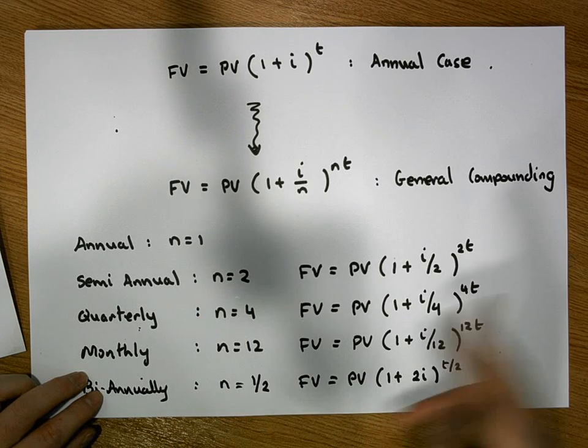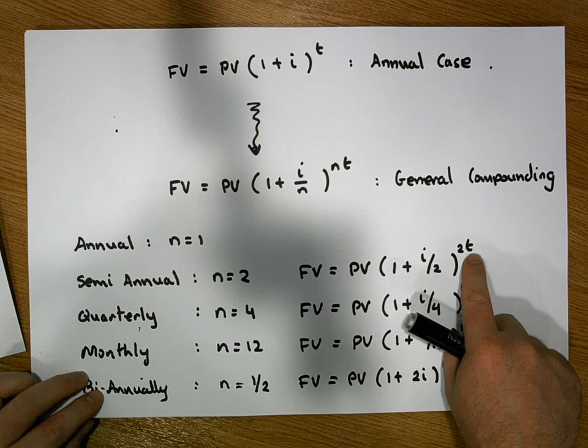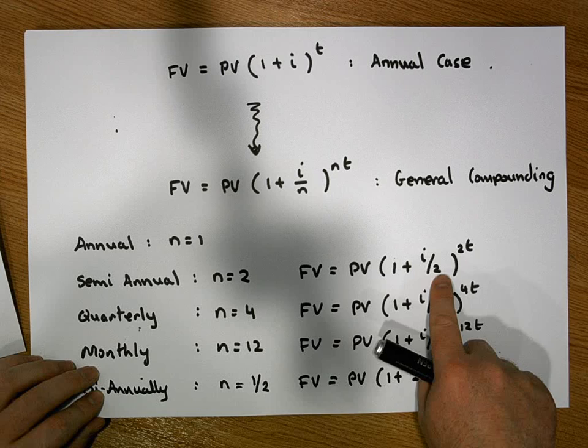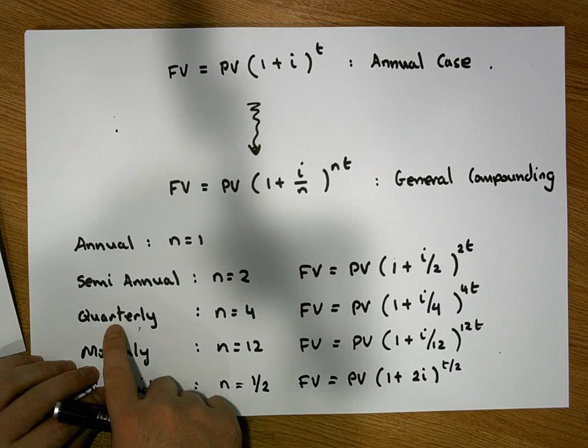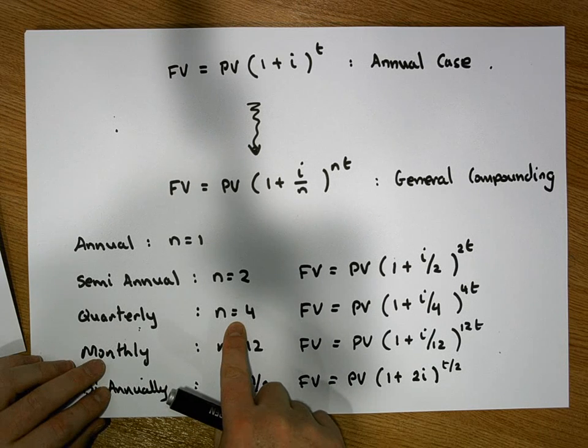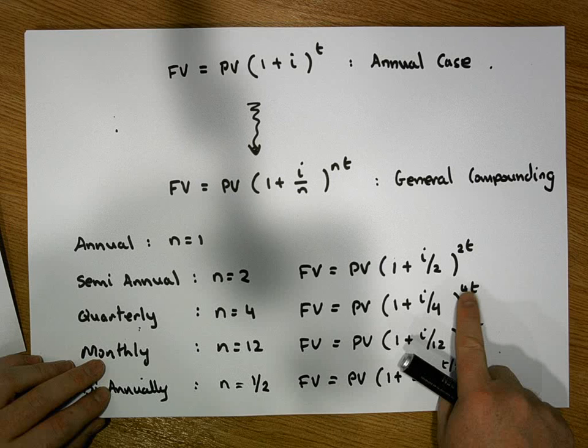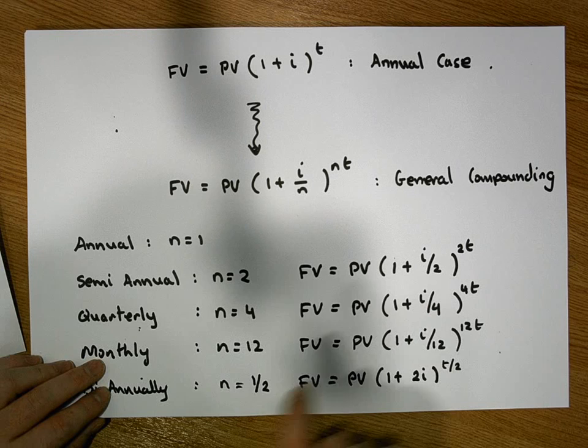So after T years, there would have been two T compoundings. And the interest rate is halved for each one of those compoundings. Similarly, in a quarterly perspective, there's four compoundings happening in a period of time. So over T years, there would be four times T compoundings. And in each period of time, there's a quarter of the interest being applied in each case.